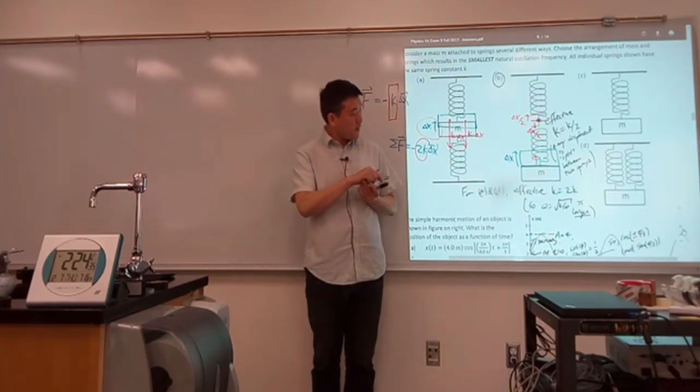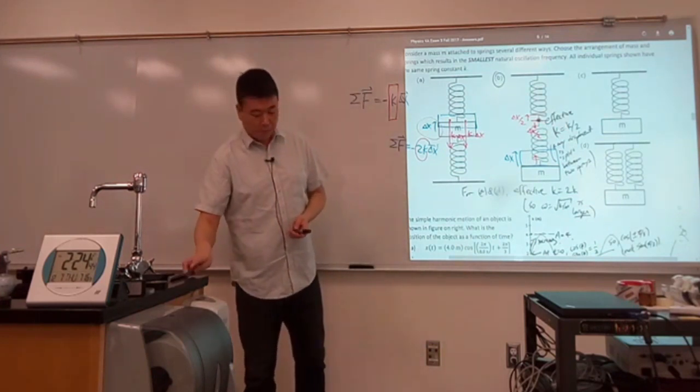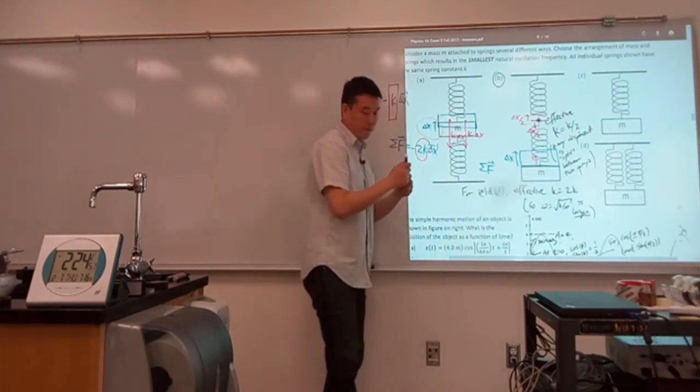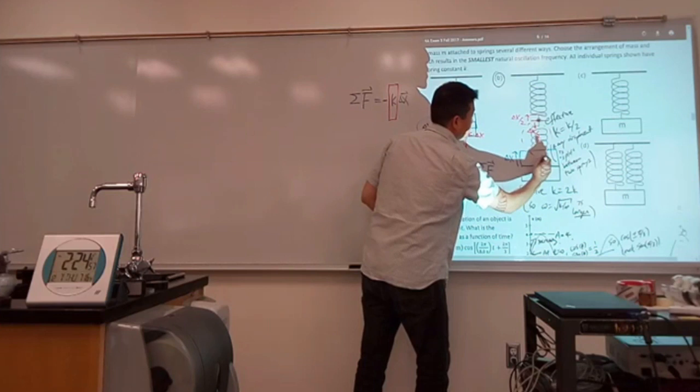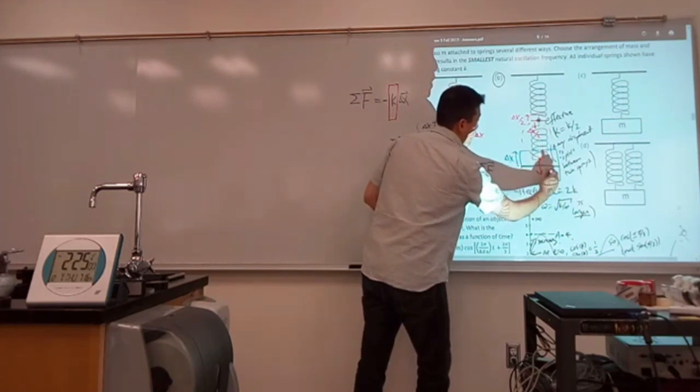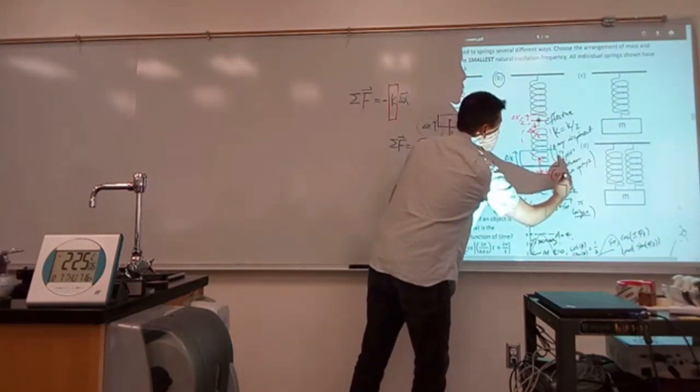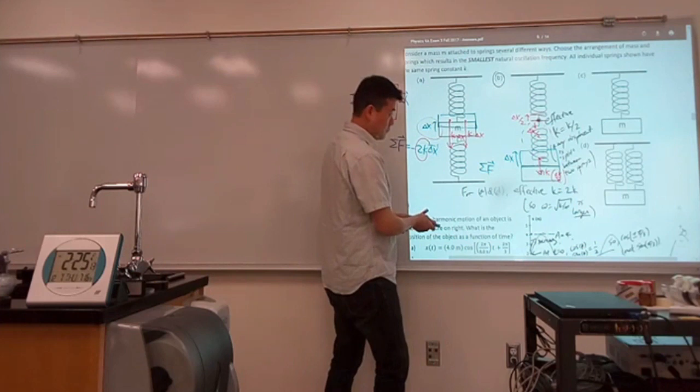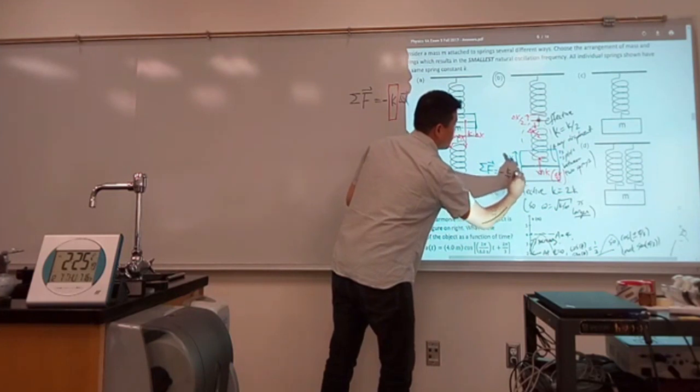So now what you can say is, well, so the force on mass, this spring is not really touching the mass. The only thing that's touching the mass is this spring. And that spring applies a force... Or let me draw the proper free body diagram. So this bottom spring here, it applies a force, downward force, of k times its own change in length, meaning delta x over 2.